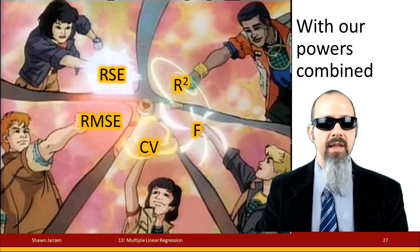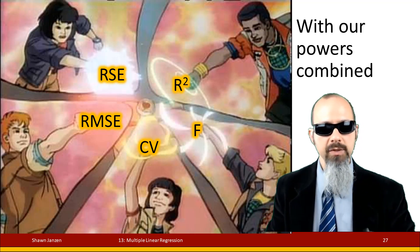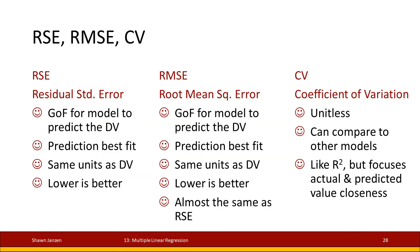Now, comparing these, they are all related to each other, so let's recap RSE for a moment. RSE, residual standard error, we said was good for the model to predict your dependent variable. It has the same units of the dependent variable — so if you're talking about some opinion on something, it's measured on the scale of that opinion. And lower units are better.